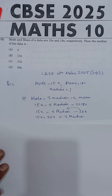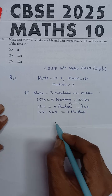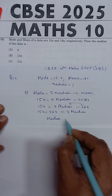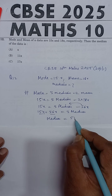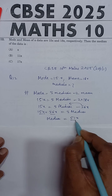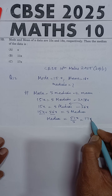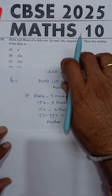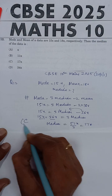Simplifying further: Median = (15x + 36x) / 3 = 51x / 3 = 17x. This value, 17x, is given in option C, so option C is the correct answer.